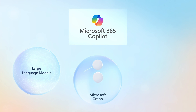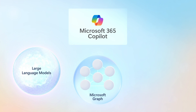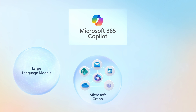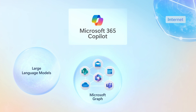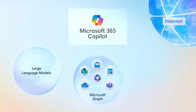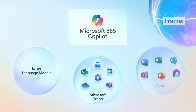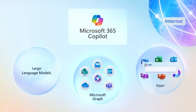information in the Microsoft Graph to find or reference files and data in places like SharePoint, OneDrive, email, your calendar, and Teams — optionally along with information found on the internet — to personalize the Copilot experience inside of Microsoft 365 apps.